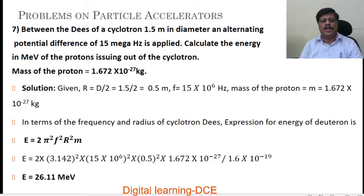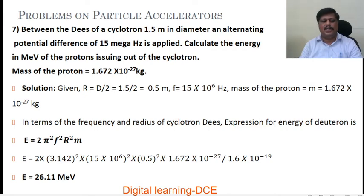So r equals 1.5 by 2, which is 0.75 meter. Frequency is 15 MHz, that is 15 into 10 power 6 Hz, and mass m equals 1.67 into 10 power minus 27 kg. In terms of the frequency and radius of the cyclotron D's, the expression for energy is given by E equals 2 pi squared F squared R squared M.